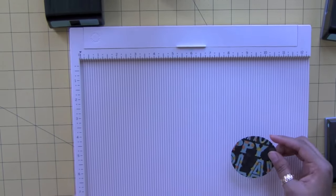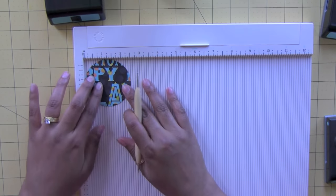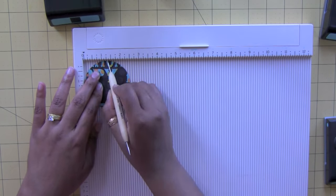I'm going to take my Martha Stewart scoreboard and score at the one and a quarter inch point. Score it really good. It makes it really easy to fold over.